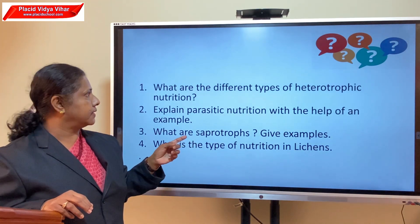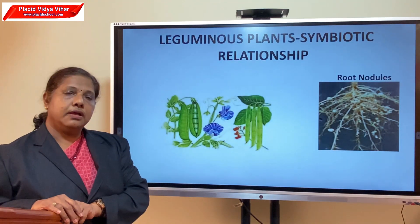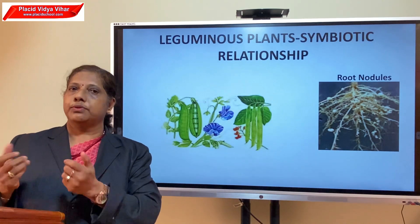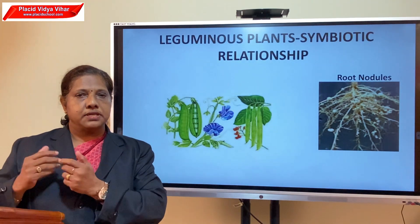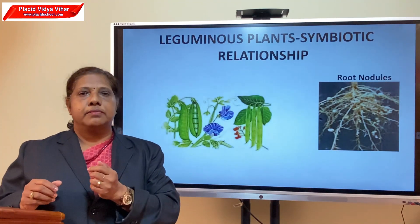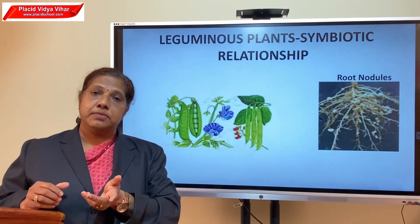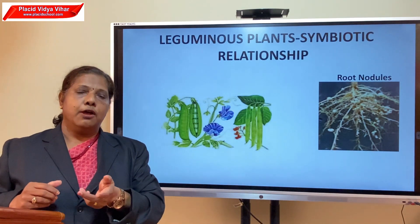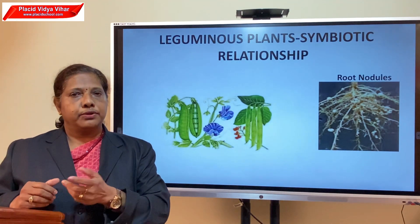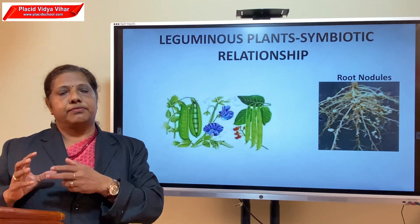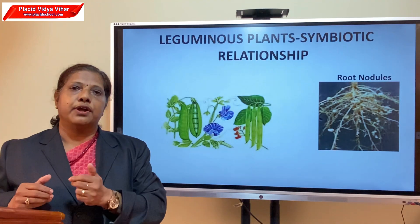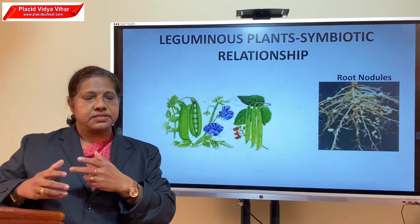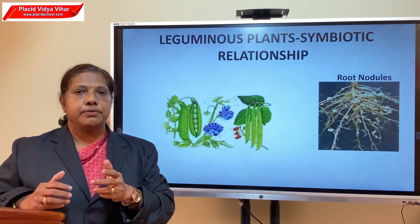Now we move on to how nutrients are replenished in the soil. Plants grow in the soil and continuously absorb nutrients from it, causing the soil to become depleted. That is why farmers add fertilizers and manures to their fields, and gardeners add them to lawns and pots. These fertilizers and manures contain nutrients required for plants, such as nitrogen, phosphorus, and potassium — we add them to enrich the soil.